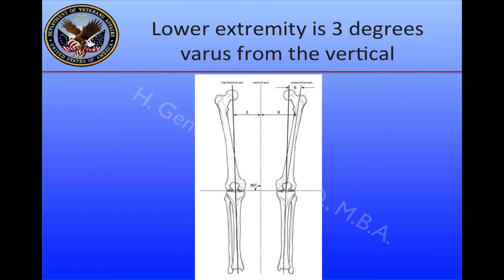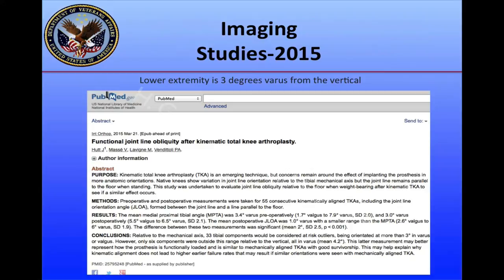An important consideration is that the lower extremity is actually 3 degrees varus from the vertical. A line from the center of the symphysis pubis to the floor at 90 degrees actually shows a departure of about 3 degrees varus for the left and right limbs when we measure the alignment of the limb.